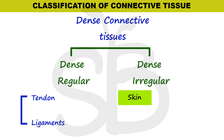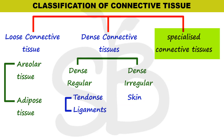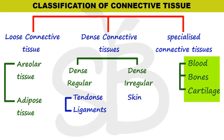Now let's look at specialized connective tissue. Examples of specialized connective tissue are blood, bones, and cartilage. These are called specialized connective tissues because they have specialized functions. You can also find lymph listed as a specialized connective tissue in the textbook.